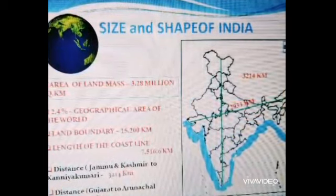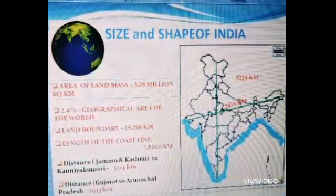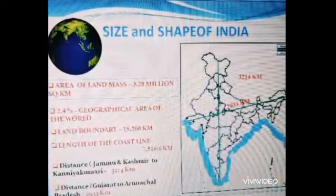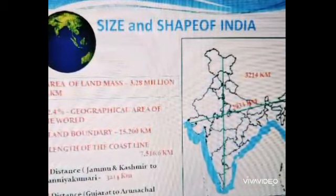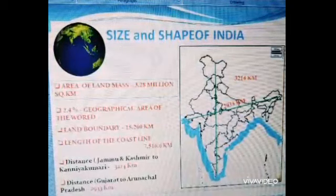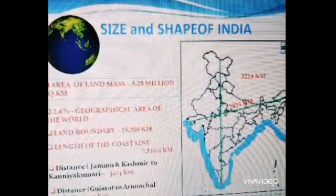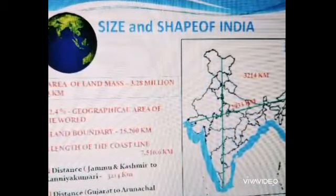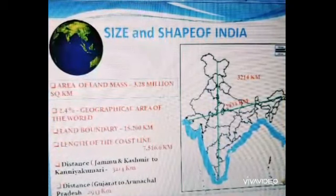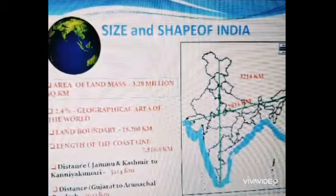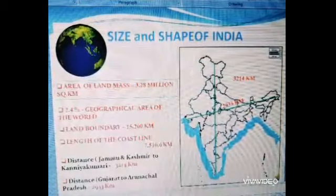The distance from Gujarat in the west to Arunachal Pradesh in the east is about 2,933 kilometers. India has a coastline of 6,100 kilometers excluding Andaman, Nicobar Islands and Lakshadweep Islands. Including Andaman, Nicobar Islands and Lakshadweep, the total length of the coastline is about 7,516 kilometers. It has a land boundary of about 15,200 kilometers.